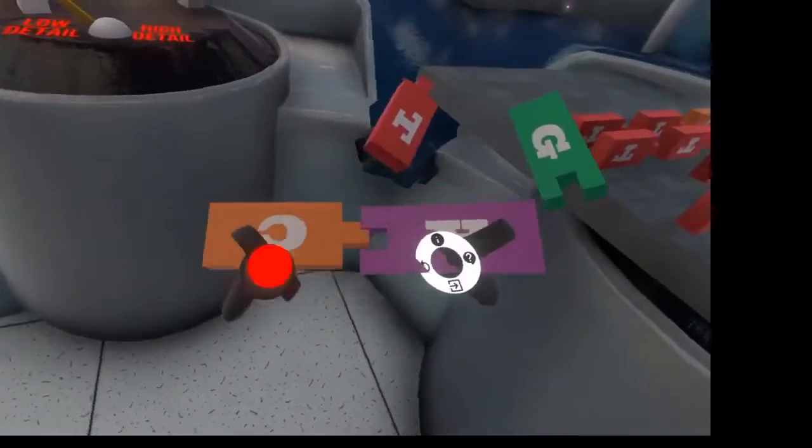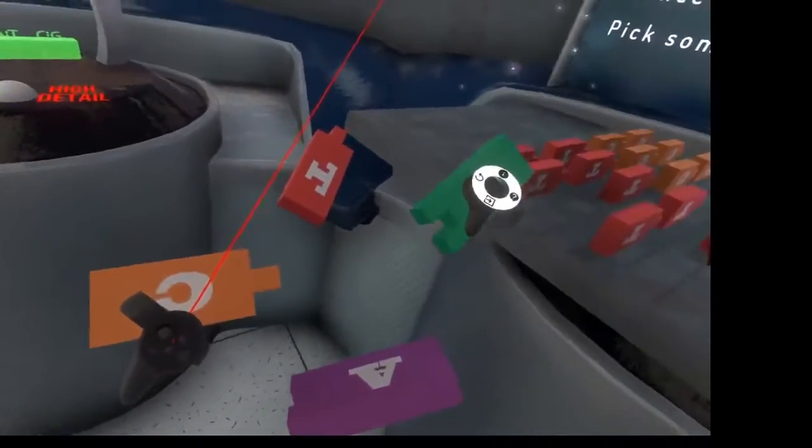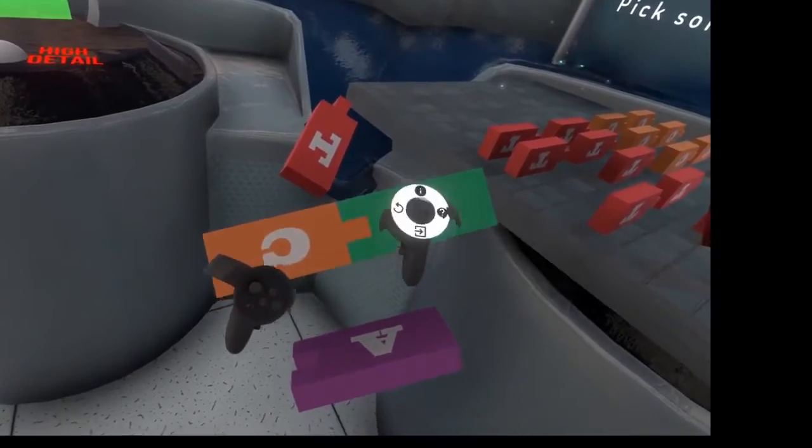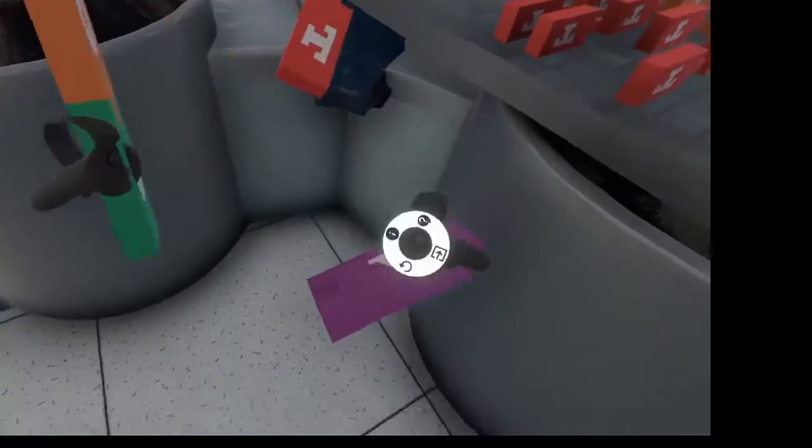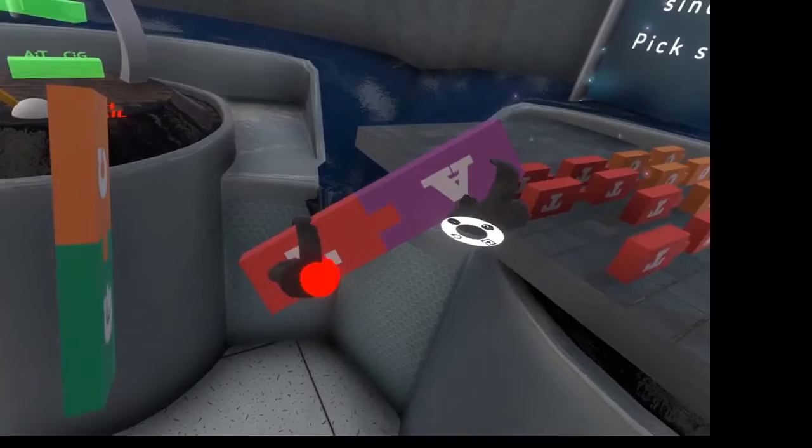The nucleotides can be snapped into bonded pairs, which can then be placed inside of a waiting double helix to begin to assemble a molecule. Only the correct pairings will result in a successful bond.